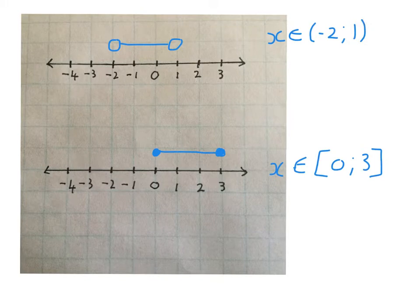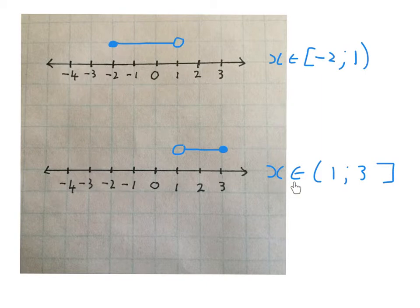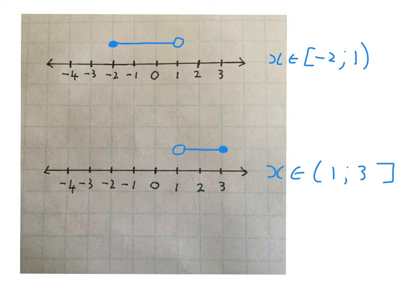Here are two more examples. This one says x is an element of from minus 2 to 1, including the minus 2 and excluding the 1 — so I put a solid dot at minus 2, a circle at 1, and a line for all the points in between. The next one says x is an element of from 1 to 3: a circle at 1 because it's excluding, a square bracket at 3 because it's including. So we want all numbers from 1 to 3, including 3 and excluding 1.